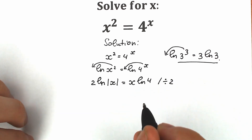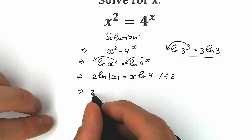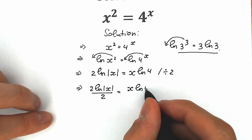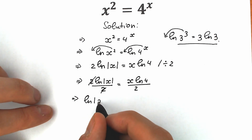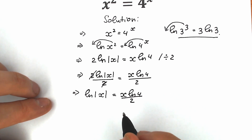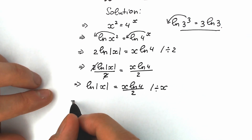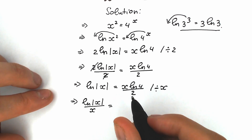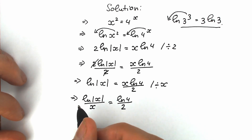When we divide both sides by 2, we have 2 natural log of absolute value of x divided by 2 on the left side, and x times natural log 4 divided by 2 on the right side. We can cancel the 2, so we have natural log of absolute value of x on the left side, and x times natural log 4 over 2 on the right side. Our last step is to divide both sides by x, so we will have natural log of absolute value of x divided by x, which is equal to natural log 4 over 2. So we've grouped our variables on the left and our constant on the right.